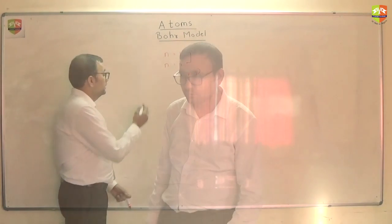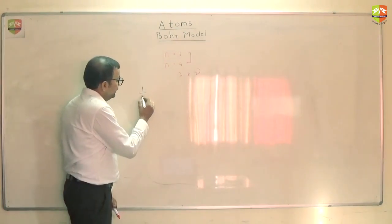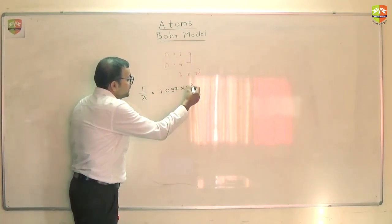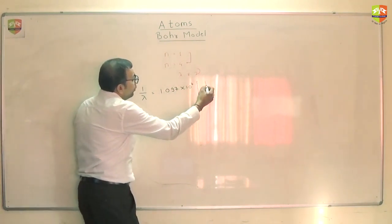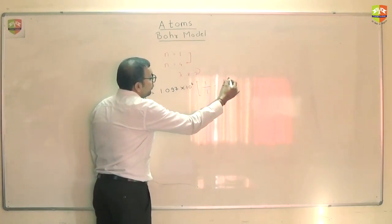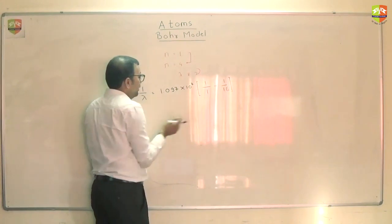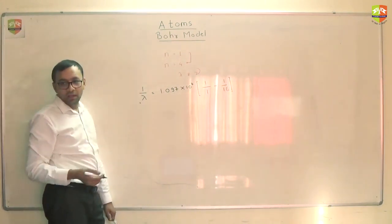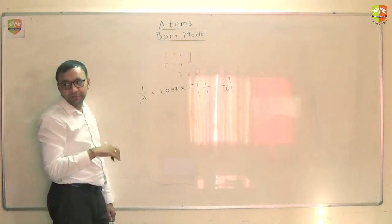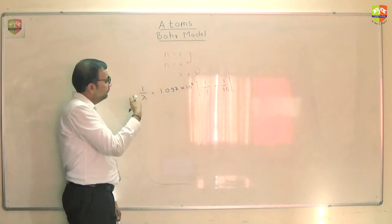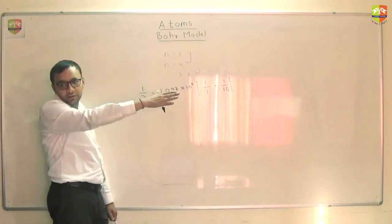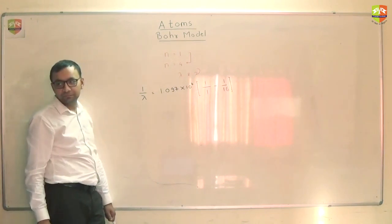You guys are stuck? See this. You can take it like this. 1 by lambda is 1.097 times 10 to the 7 into 1 by 1 square minus 1 by 4 square which is 16. Once you simplify this, you will get the value of lambda. How will you get frequency? Multiply this with speed of light. C by lambda. First, it is easy to get frequency. Just multiply with the C. That is the frequency.